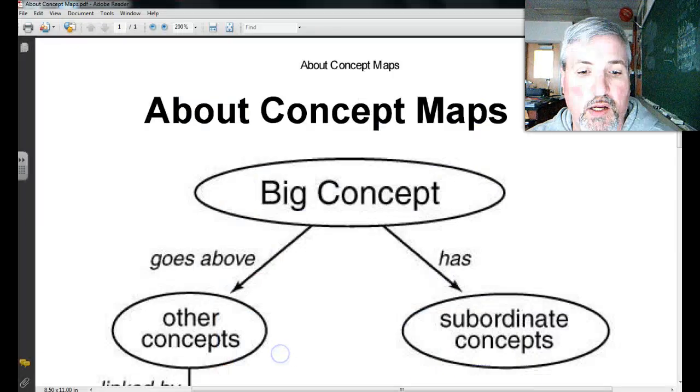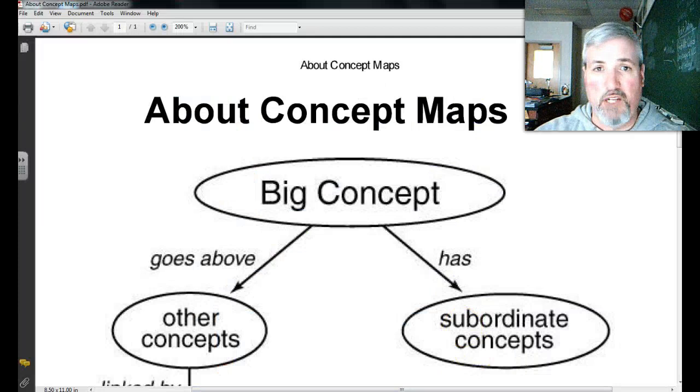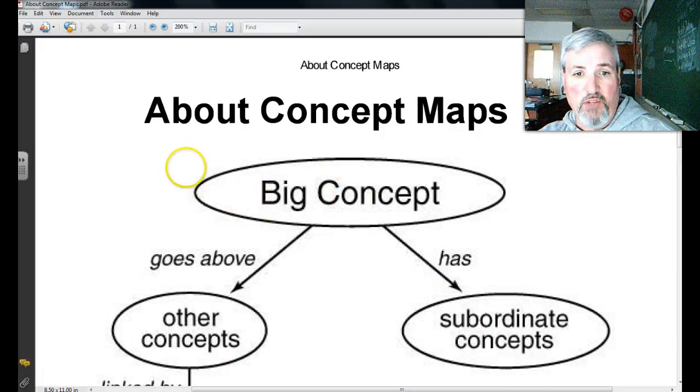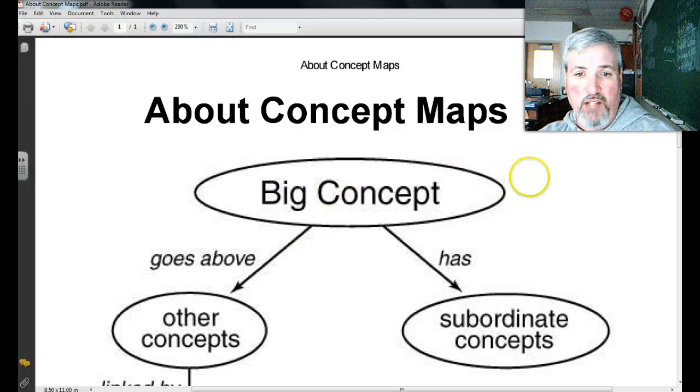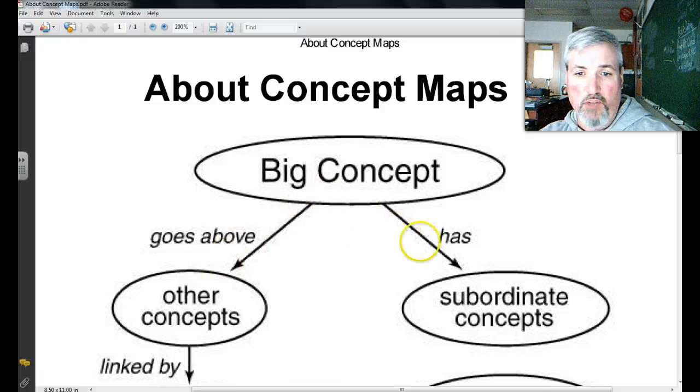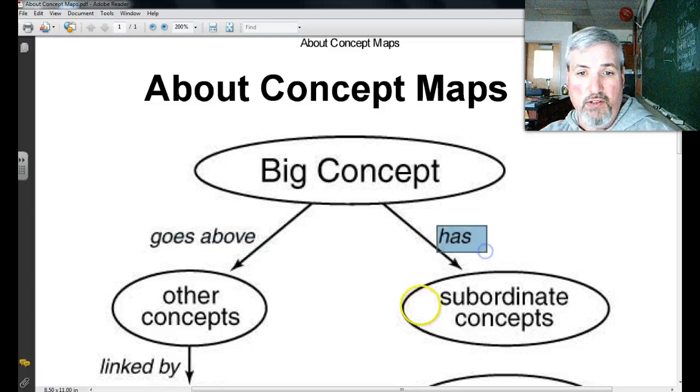So let me talk about concept maps. Concept maps, thematic maps, semantic maps, start off with a big concept. So you can see right here the big concept. And then everything that is related to it comes underneath it. Usually they're connected with arrows, and they have the arrowhead to show which way the relationship is. And then they're usually words. So here you can see the words goes above, or has.